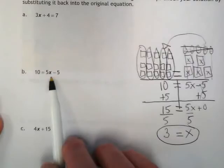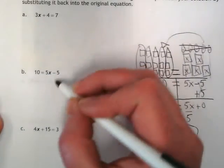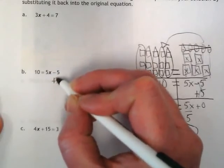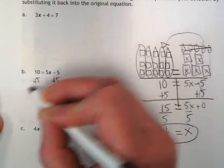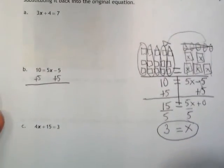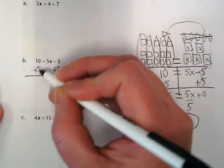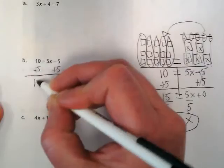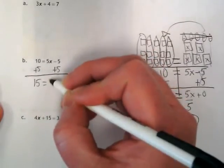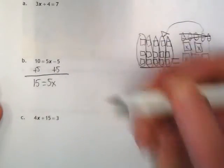We want to get x by itself, and right now 5x is minus 5. So what are we going to do with the minus 5? I got to get that because we want to get that to be a 0 on that side of the equal sign. When we do that, 10 plus 5 becomes 15, and 5x stays as it is because we haven't touched it yet.